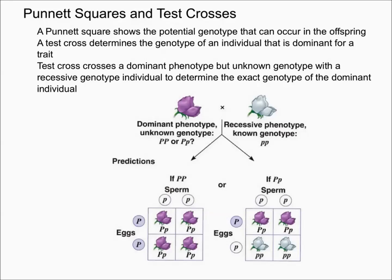To summarize: you have a purple flower with an unknown genotype and you want to determine if it's homozygous dominant or heterozygous. To do this, you're going to mate it with a homozygous recessive individual — in this case, the white flower.